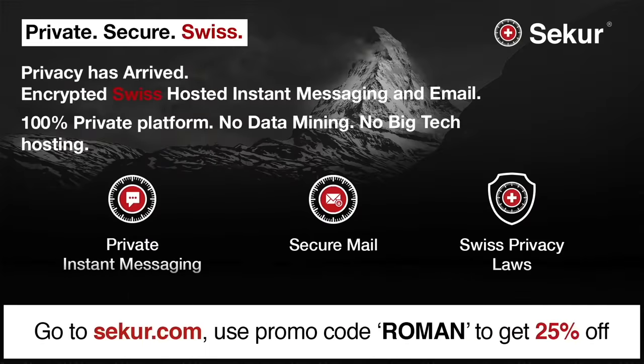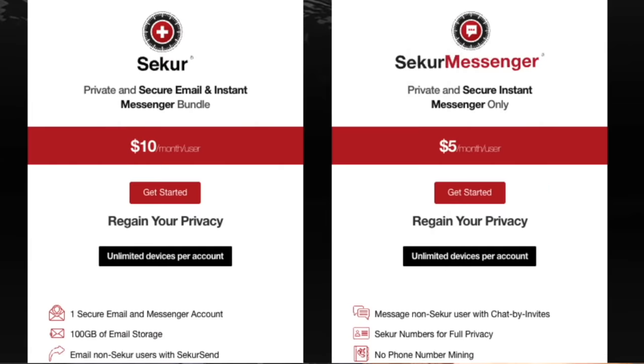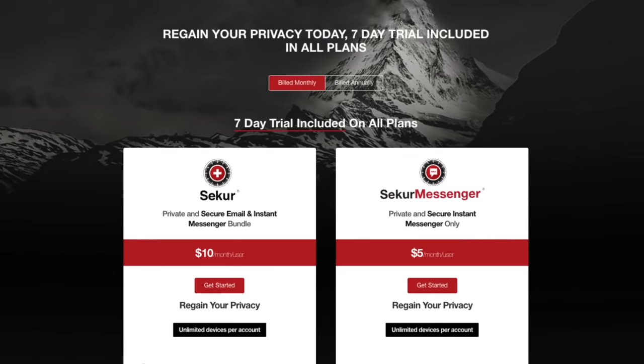And so what they're doing doesn't work with your existing big tech email account. So check them out. You can head on over to secure.com. I'll throw the link into the description box below. And when you use promo code Roman, you can get 25% off. And the rates are not even that expensive to start with. By the way, it's only $5 for the messenger and $10 for the email and messenger combo. And they even offer a seven day free trial. So head on over to their website. Again, it'll be linked in the description box below. Use promo code Roman to save some money. And now Roman in the studio, back to you.